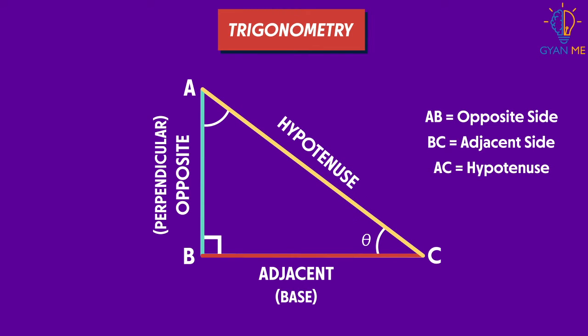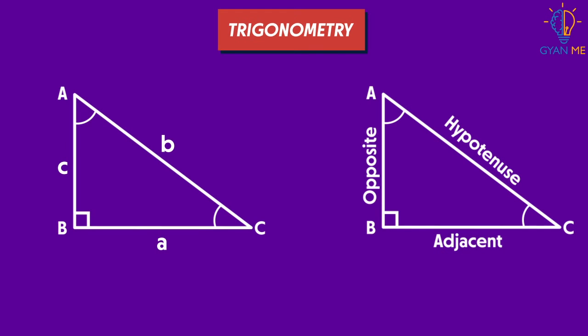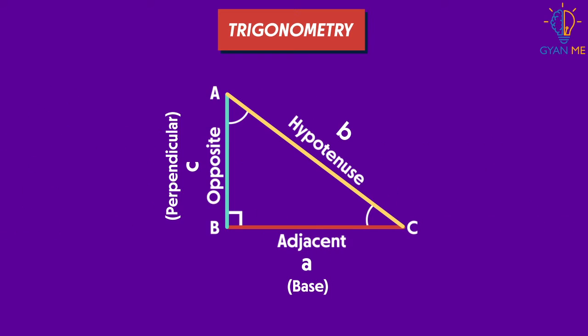But wait, technically, hypotenuse is also the adjacent side to this angle theta, isn't it? Yes, but we have already given it a name. So we will take it as it is, as hypotenuse and not the adjacent side. So now for this triangle ABC, we have AB or c as the opposite side or perpendicular. BC or a as the adjacent side or base and AC or b as the hypotenuse for this reference angle.